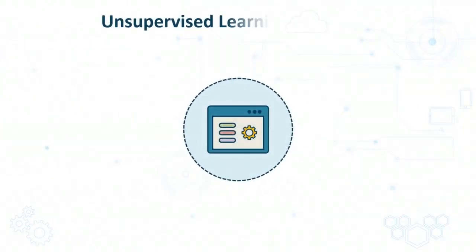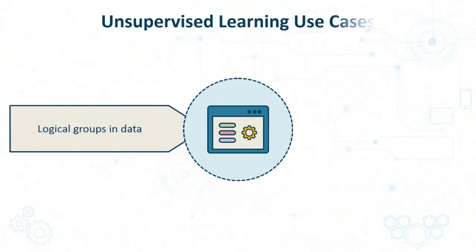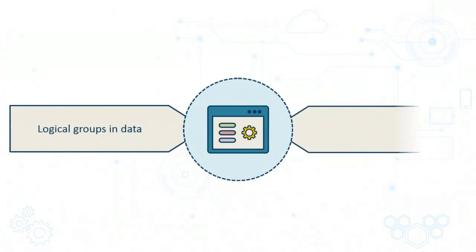Moving along to the use cases for unsupervised learning, we already saw that logical groups within the data can help you identify users who are music lovers or sports lovers, and you're likely to find patterns which you never even imagined in the first place. For example, you may find a group of teenagers who happen to be very interested in music from the 1950s.